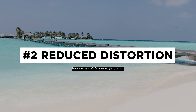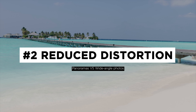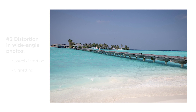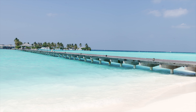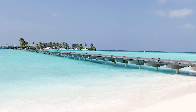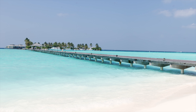Wide-angle lenses sometimes can introduce distortion, particularly at the edge of the frame. By taking multiple photos and stitching them together, you can minimize this distortion and achieve a more natural-looking panorama. Especially you can minimize barrel distortion and vignetting.